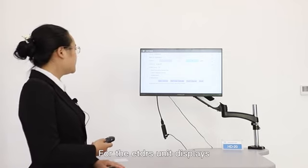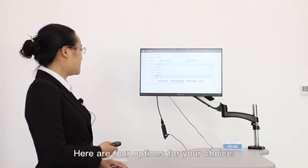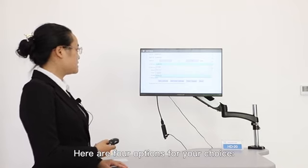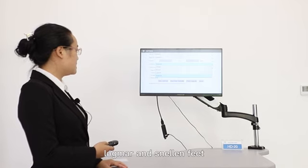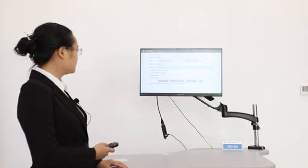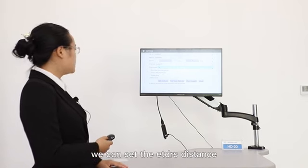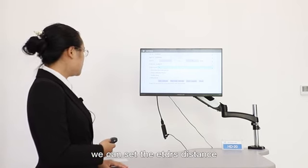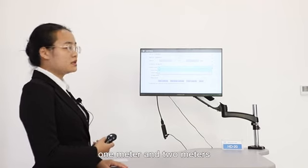For the ETDRS unit display, here is four options for your choice: 5th grade, decimal, logMA, and scenario filter. And also, you can set the ETDRS distance. Here is two options: one meter and two meters.